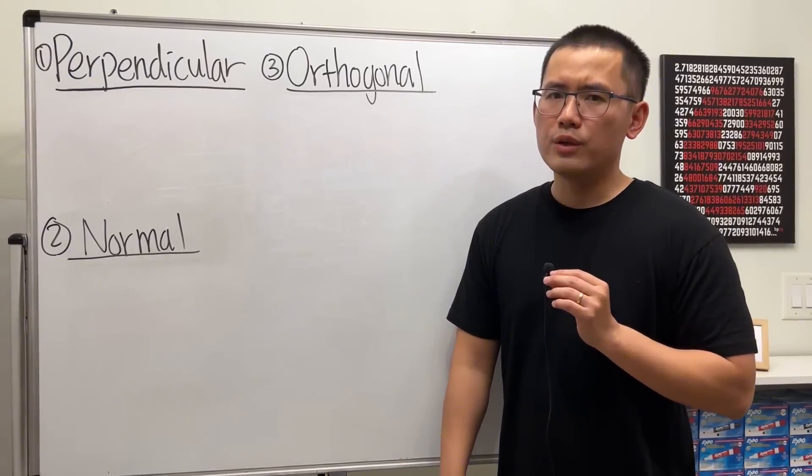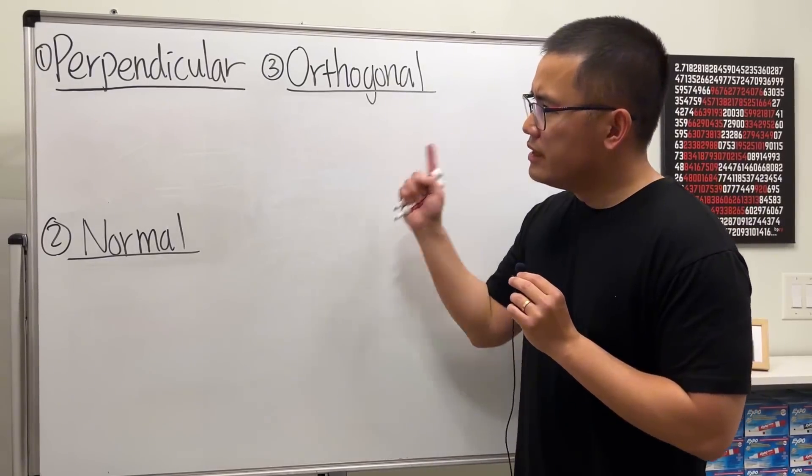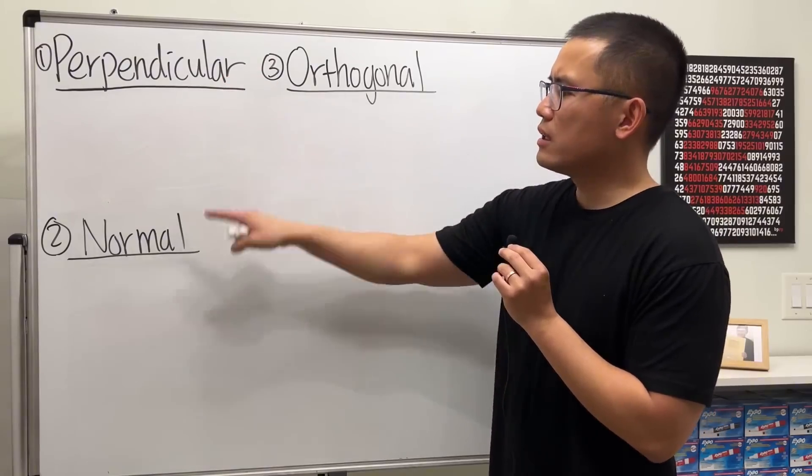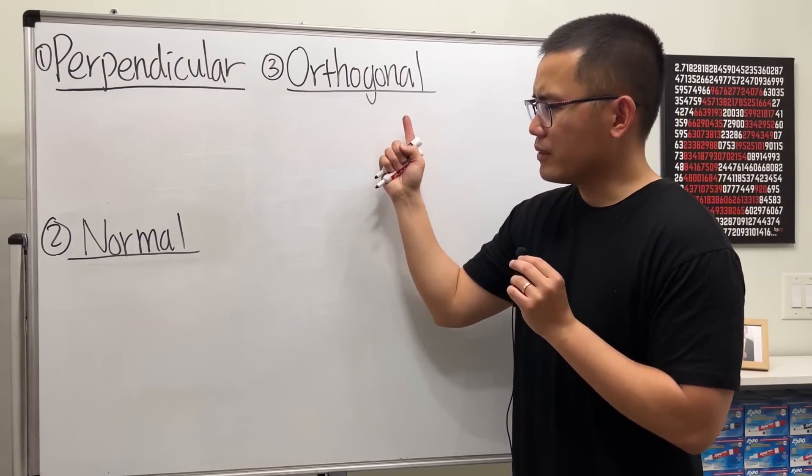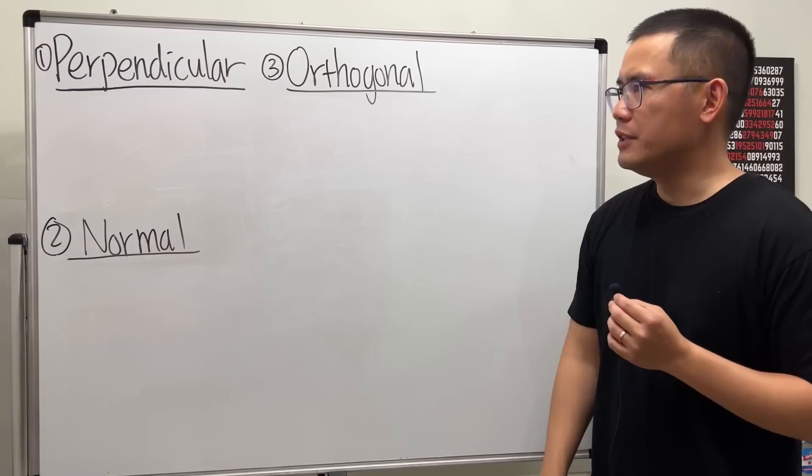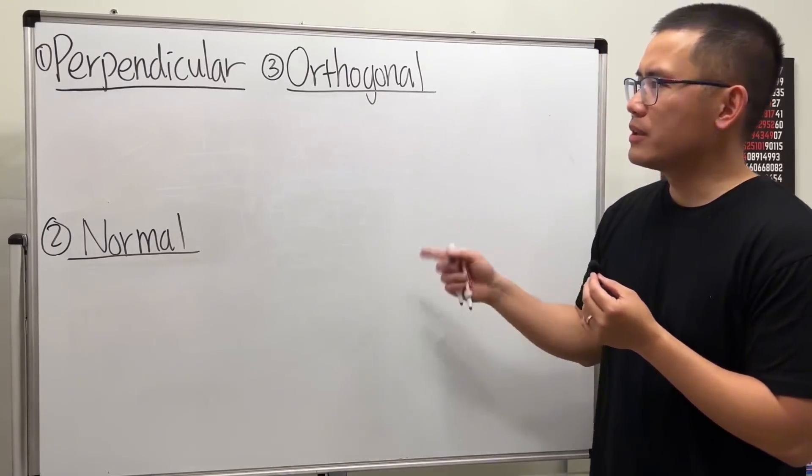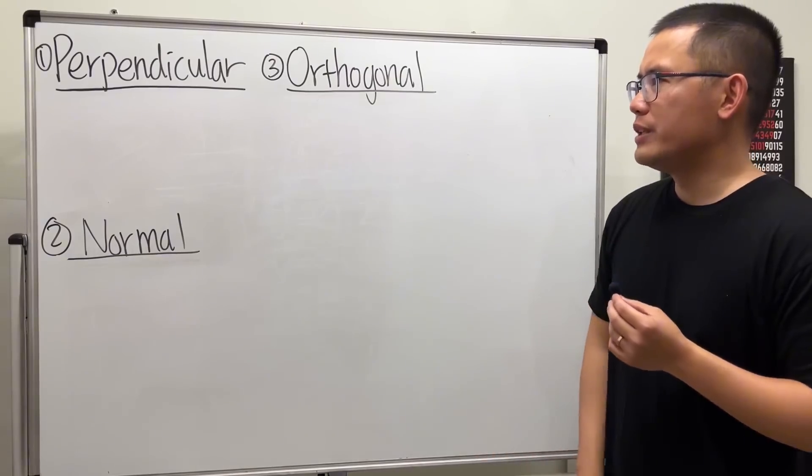I've been doing a lot of Calculus 3 videos on my other channel, and one of the things that's been bothering me is that these three words: perpendicular, normal, and orthogonal - it seems like they all mean the same thing, but why do they have three different words? So if you're like me who has been wondering about this, then here's the summary that I came up with.